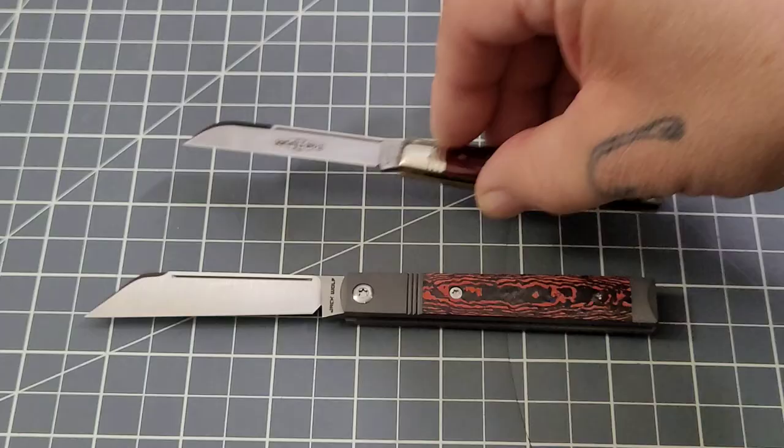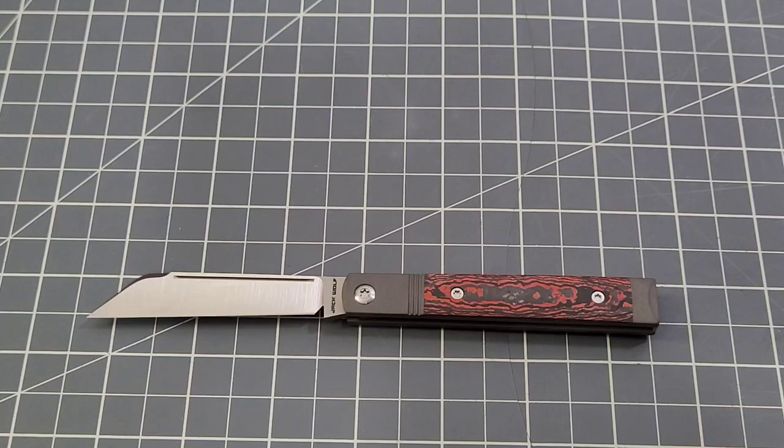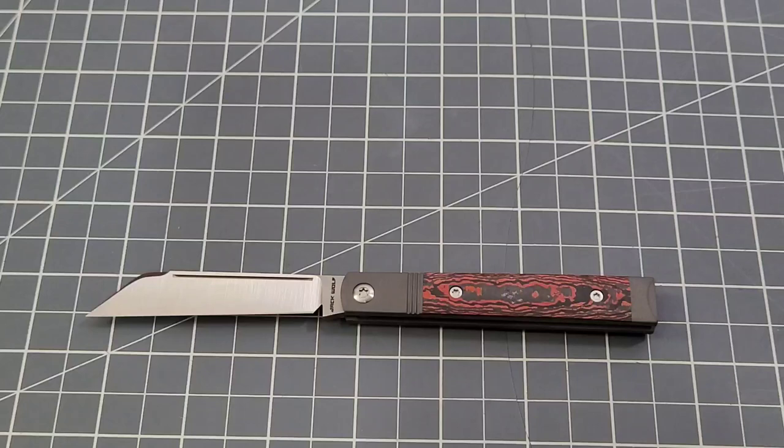But there you go, there it is up against the GEC Number 49. I know Ben, big time fan of the GECs, well slip joints period really. I've seen part of his collection, he's got a fantastic collection.